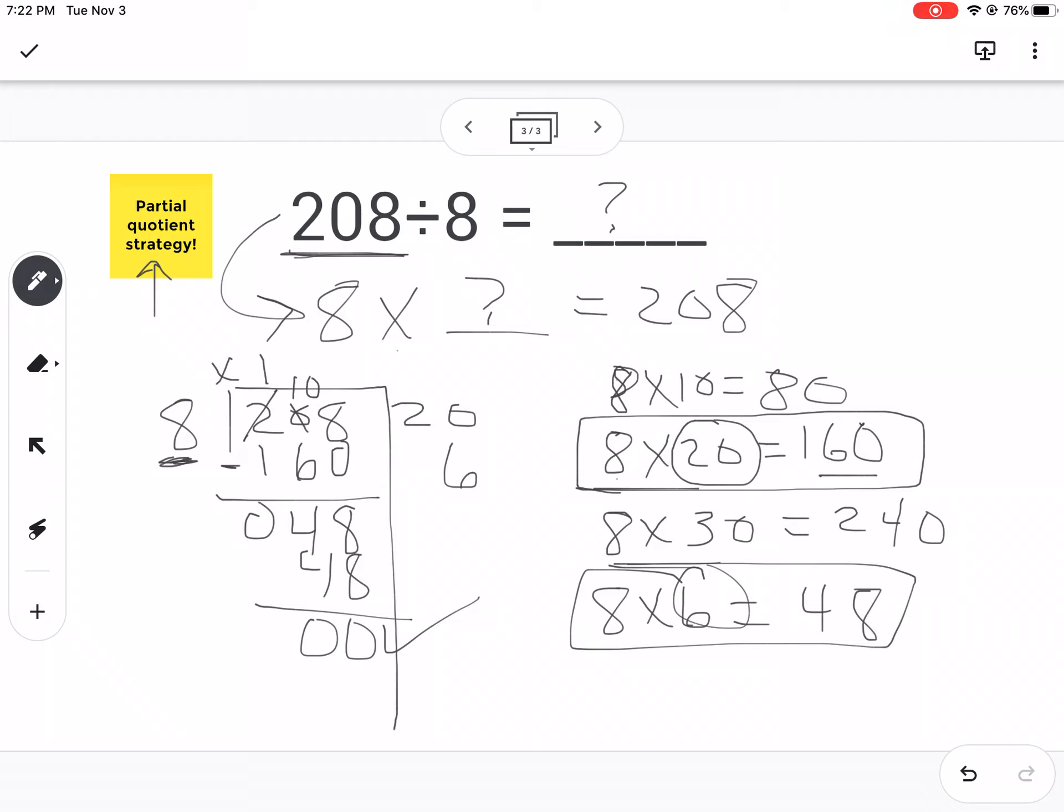That's exactly what I want. And now I need to go and get my final answer, which is right here on the outside. You're going to add up these numbers. 20 plus 6 is 26. So your final answer to 208 divided by 8 is 26. Or 8 times 26 is 208.